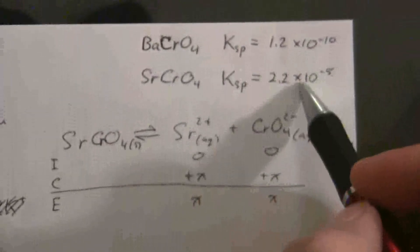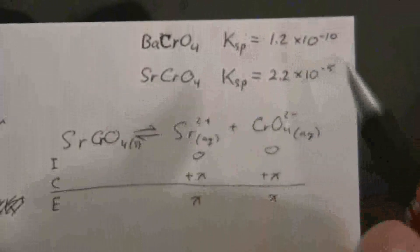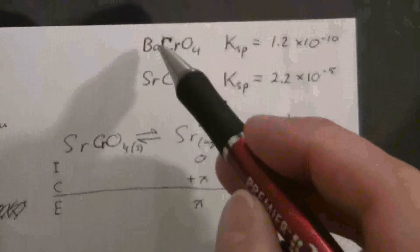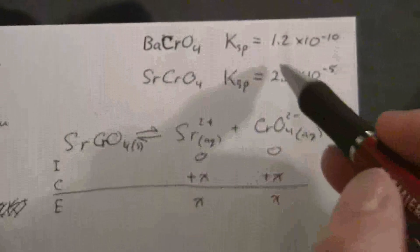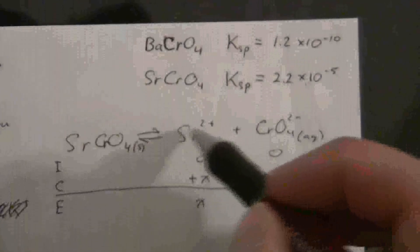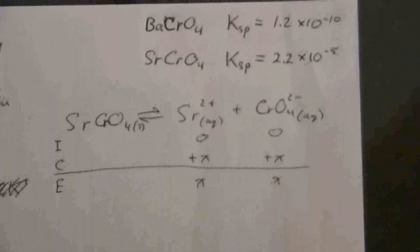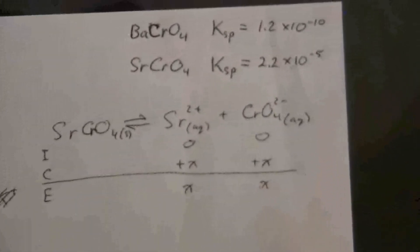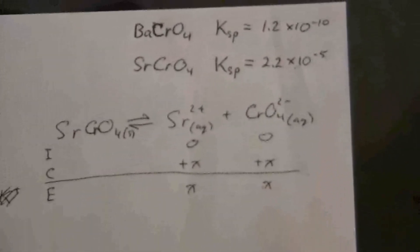So we can compare those directly, but if it weren't one to one for those, then we would have to do this for both of them, solve for x, and compare to get it on an equal basis.